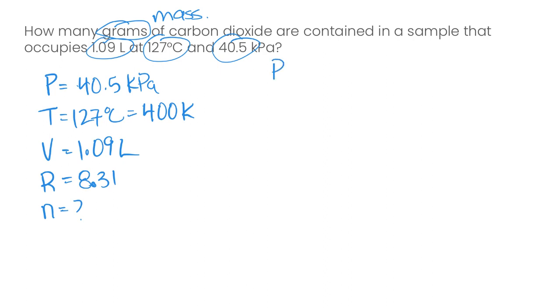So we can set up our PV equals nRT, and rearranging to solve for moles, we would have PV over RT. So we're just going to plug in all of our values here.